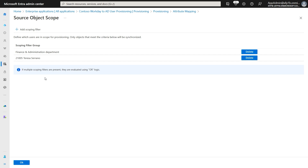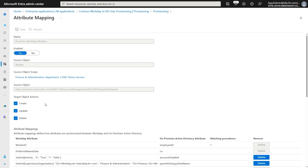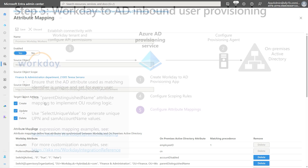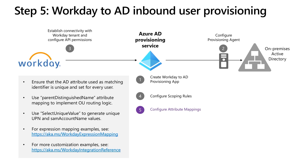Under Target Object Actions, you can also specify the actions that you want to limit the app to perform in your Active Directory domain. In step five, we will configure how attributes flow from Workday into your Active Directory domain. The provisioning app ships with a default set of mappings. Based on how you handle pre-hire processing, conversions, and terminations in Workday, you can customize the attribute mappings. Refer to our Workday integration guide for more details on customizations.